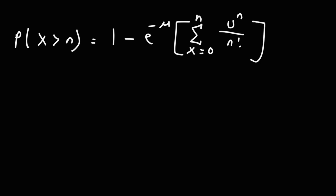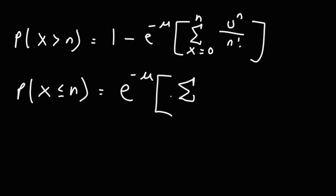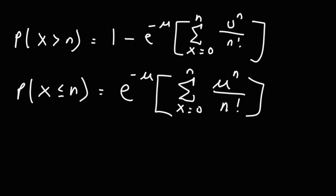For those who want to see example problems on how to apply some of these formulas, feel free to check out the links in the description section below. For the Poisson distribution, if you need to find the probability that x is less than or equal to n, it's going to be e to the negative mu times the summation from x equals 0 to n of mu to the x over x factorial. By the way, these two should both be mu — they're the same variable.